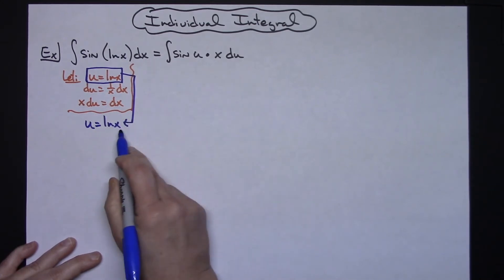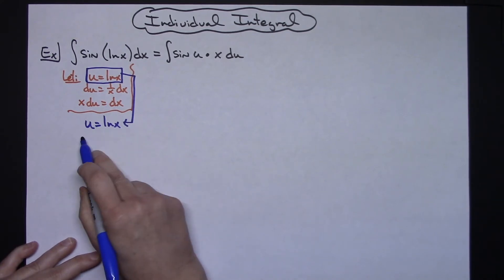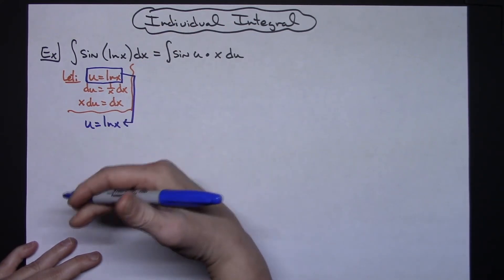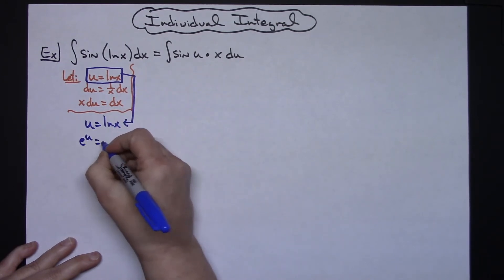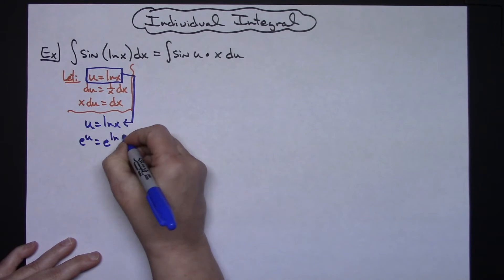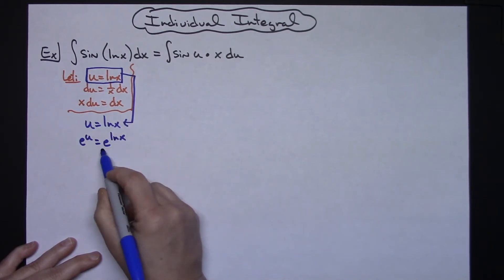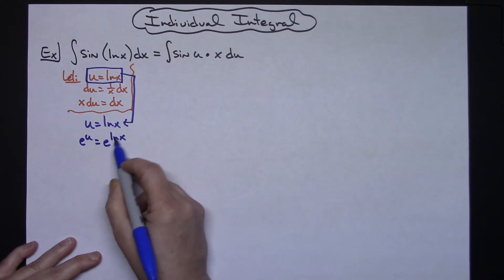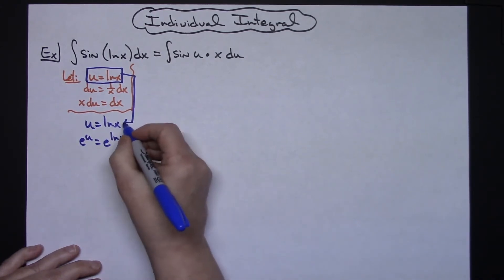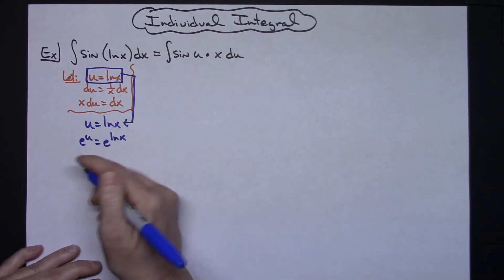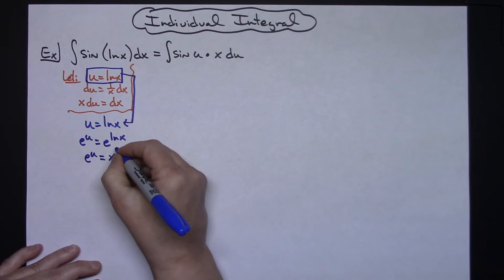I want to get a value of x. If I take both sides and raise them with a base of e, I write it as e to the u is equal to e to the natural log of x. That makes the right side turn out to be just x, because the e and the natural log cancel out. So e to the u equals x.